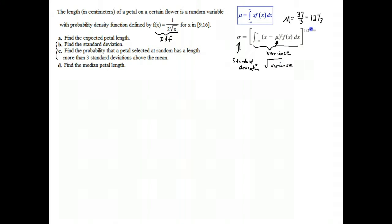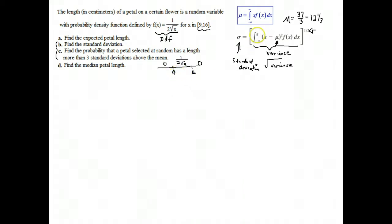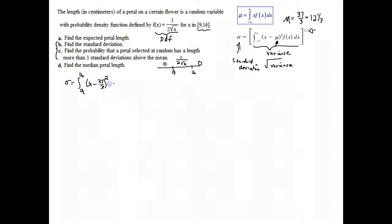So we calculate the integral and then take the square root. It's supposed to be the integral from minus infinity to infinity, but this function is only alive between 9 and 16. Before 9 the function is 0, and after 16 it's 0; between 9 and 16 the function is 1 over 2 root x. So the integral degenerates to just the integral from 9 to 16. The mean being 37 over 3 causes trouble with fractions. We have the PDF 1 over 2 root x as f(x), and we take x minus the mean, square it, and integrate from 9 to 16.